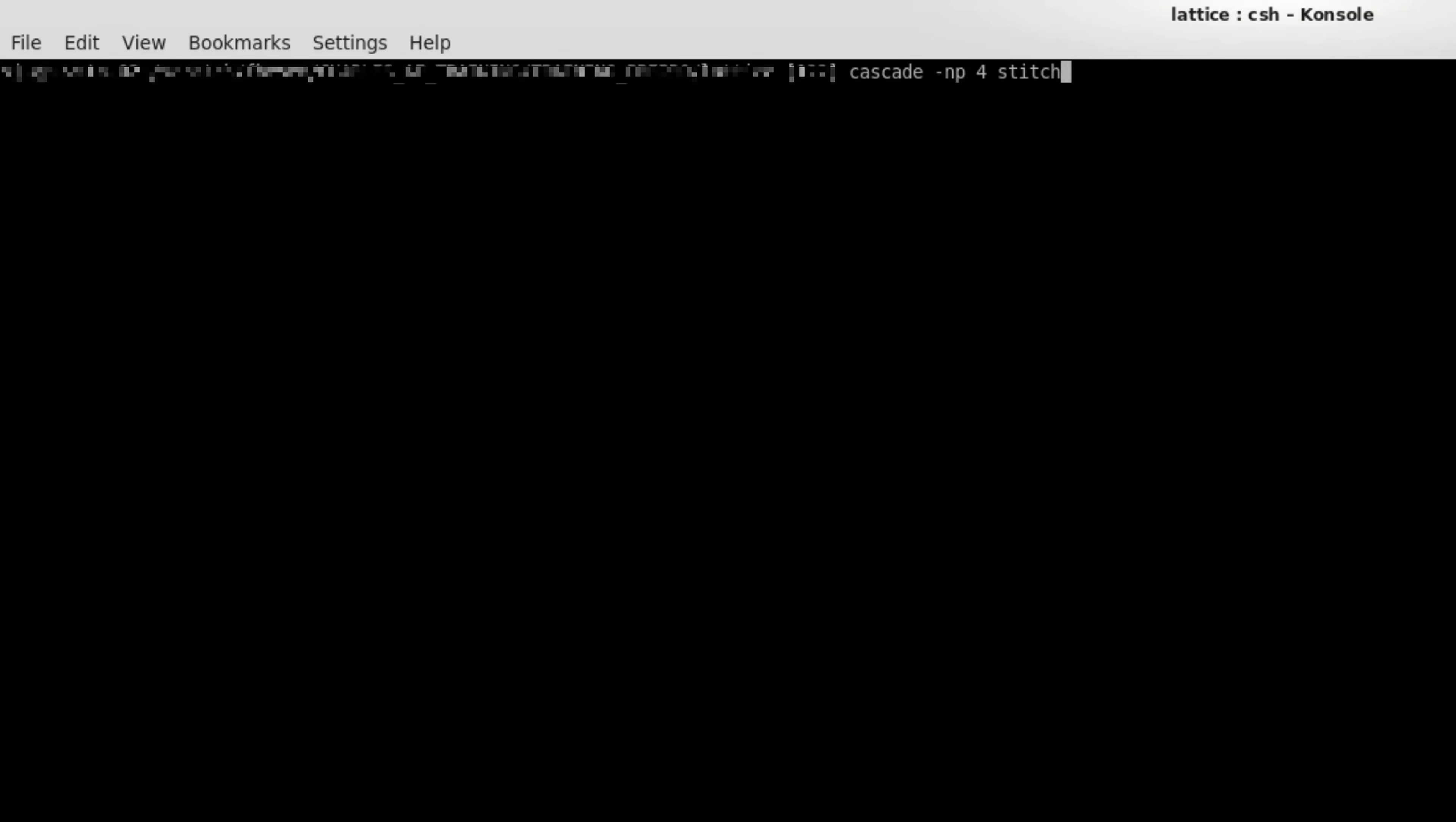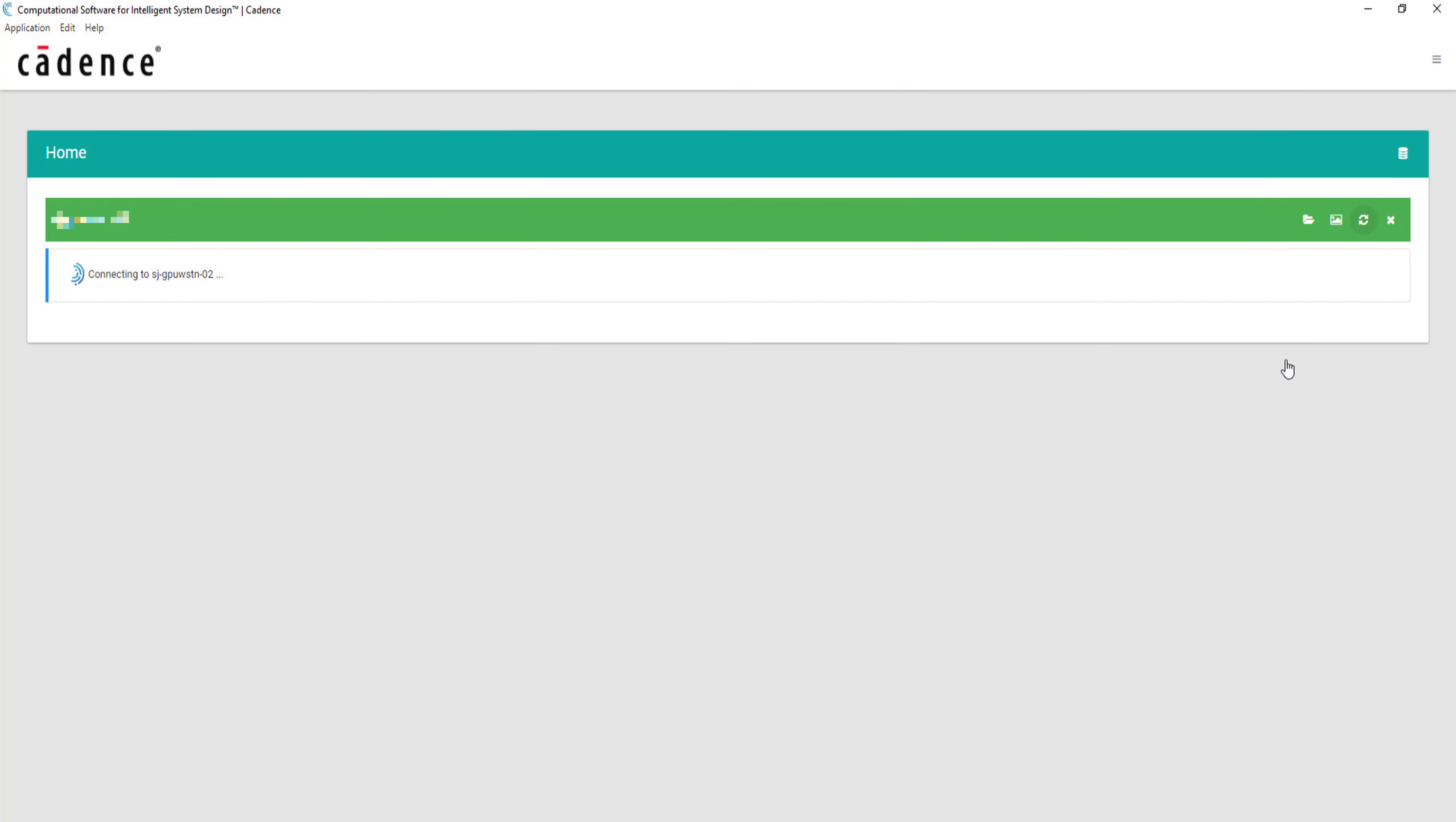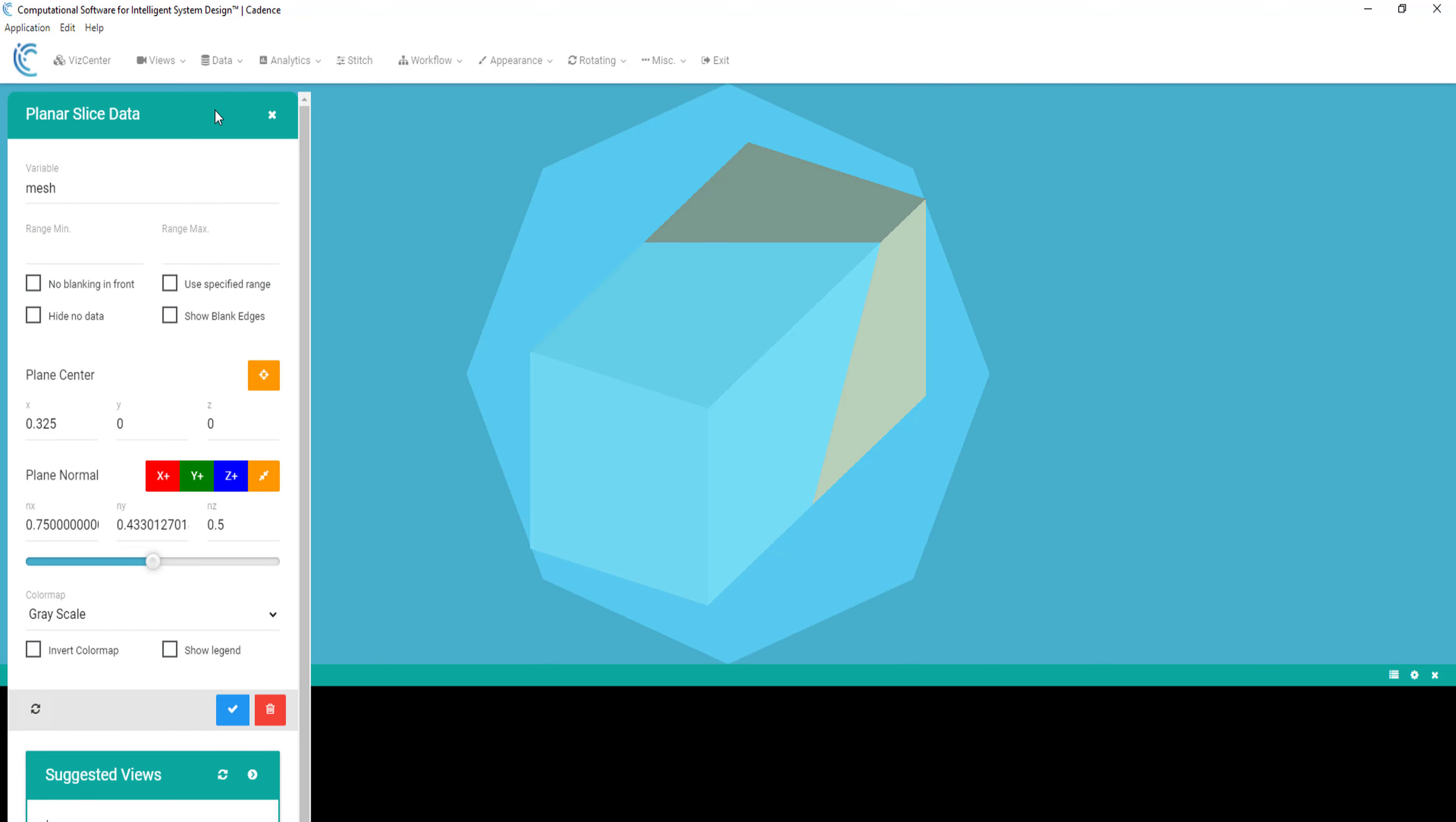Let's start Stitch from the terminal and give it a geometry file as argument, followed by the interactive flag. Then, let's connect our Connect app to the Stitch session. Here is the geometry that we have loaded. Let's create a cutting plane through the middle and realign the view.